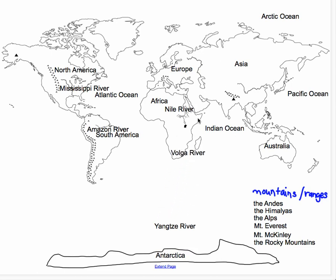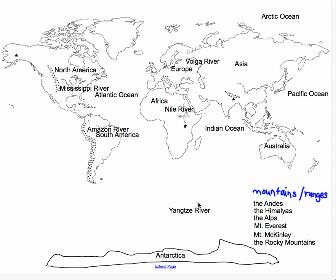Next is the Volga River, and that actually splits between two continents — Europe and Asia. And then finally, the Yangtze River is right over here, and it's in China. So we've located all the rivers.